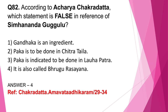Question number 82: According to Acharya Chakra Datta, which statement is false in reference to Simhanada Guggulu? Option 1: Gandhaga is an ingredient — correct. Other ingredients are Trifala, Kashaya and Guggulu. Option 2: Paka is to be done in Chitra Thaila — correct. Option 3: Paka is indicated in Loha Patra — correct. Option 4: It is also called Bhrgu Rasayana — this is wrong. So the correct answer is option 4. Simhanada Guggulu is mentioned under the context of Aamavada Chikitsa, with Anupana Sarpis Thaila Rasopeda Shali Shashtika.